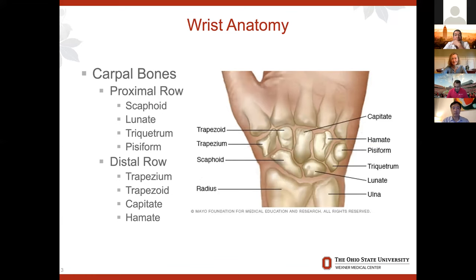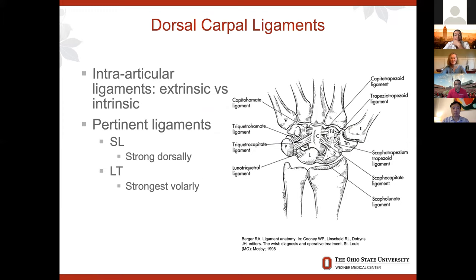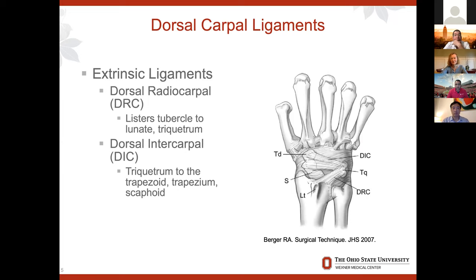Then you go to the ligaments. You have dorsal carpal ligaments — both extrinsic and intrinsic. Looking at the dorsum of the wrist, pay particular attention to the scapholunate interosseous ligament, which is quite strong dorsally. The lunotriquetral ligament is strong volarly. You have the dorsal radiocarpal ligament, which goes from Lister's tubercle and inserts distal to the triquetrum spanning across the lunate, and the dorsal intercarpal ligament, which goes from the triquetrum to the trapezoid and trapezium.